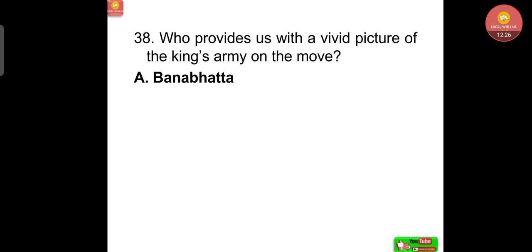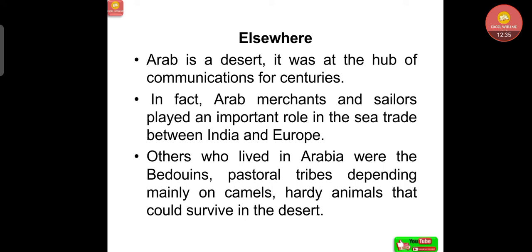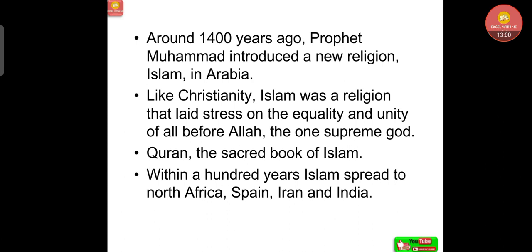Banabhatta provides us with a vivid picture of the king's army on the move. Moving to the end of the chapter: Arabia is a desert that was at the hub of communications for centuries. Arab merchants and sailors played an important role in sea trade between India and Europe. The Bedouin were pastoral tribes depending mainly on camels. Around 1400 years ago, Prophet Muhammad introduced a new religion, Islam, in Arabia. Like Christianity, Islam laid stress on the equality and unity of all before Allah. The Quran is the sacred book of Islam.